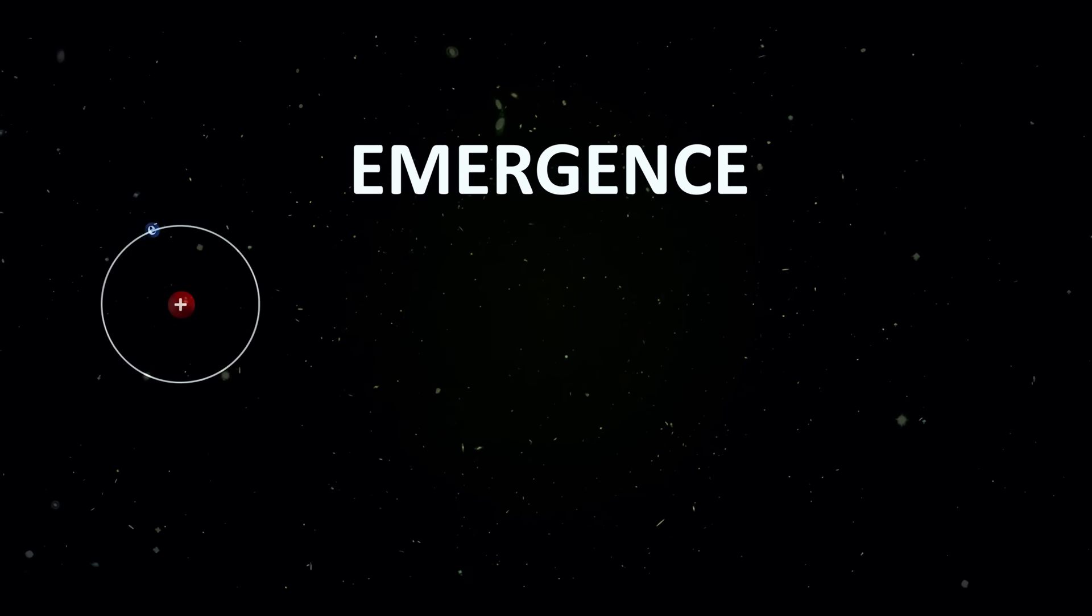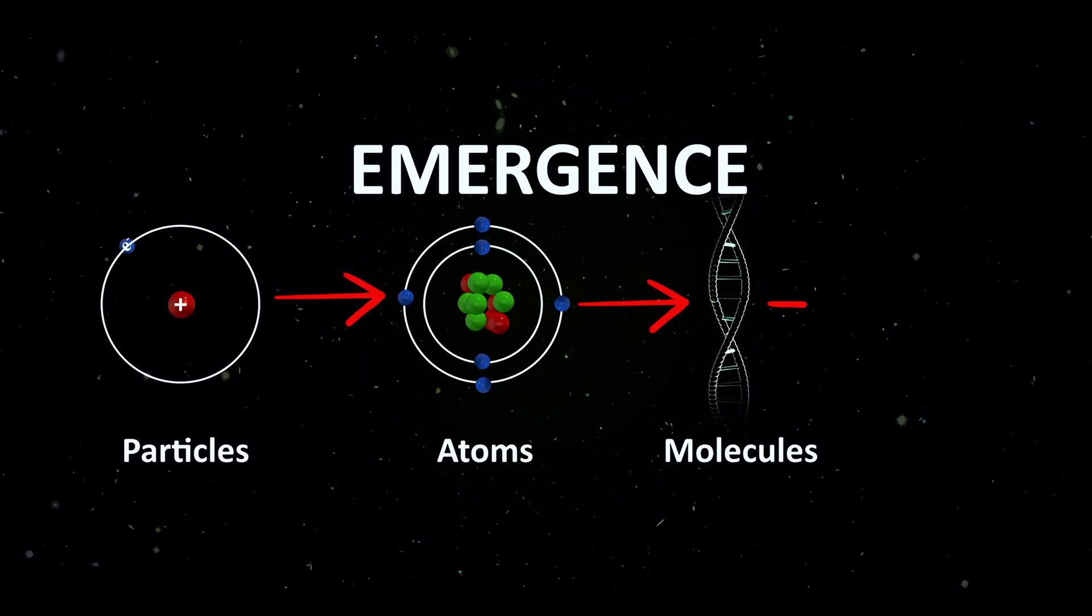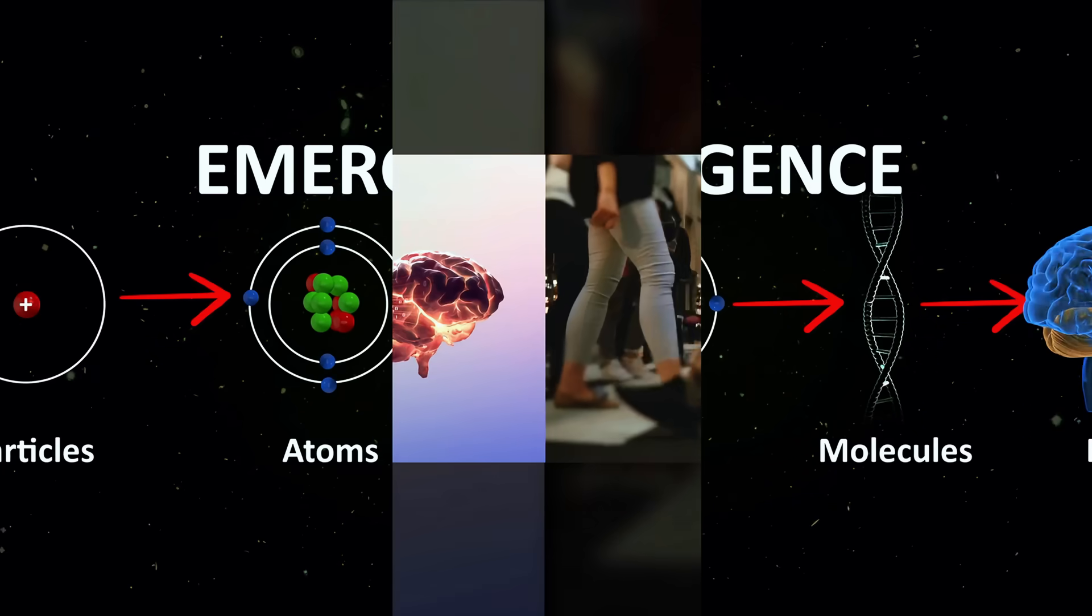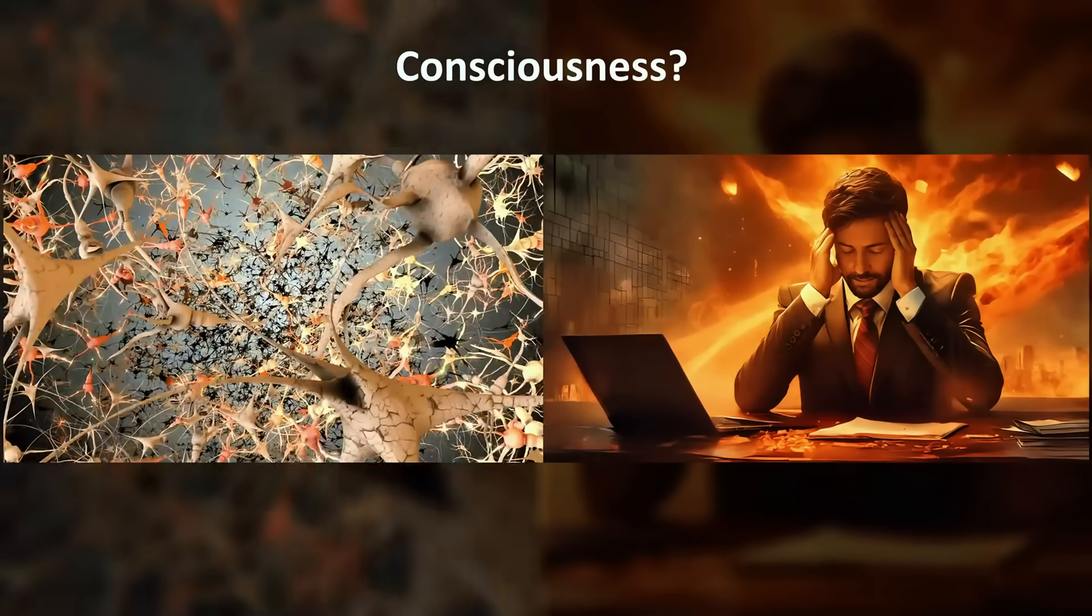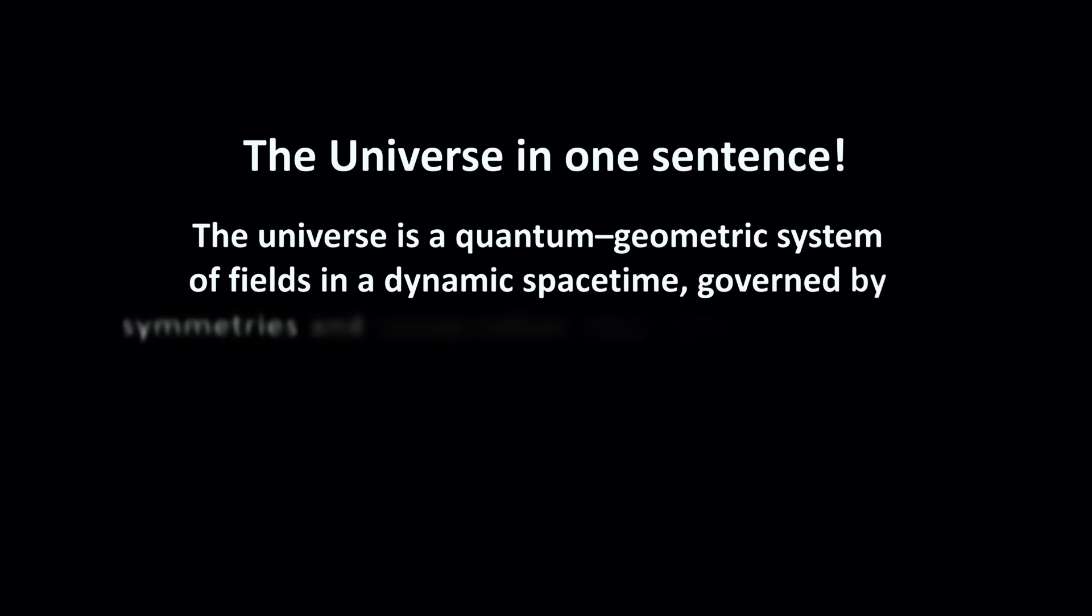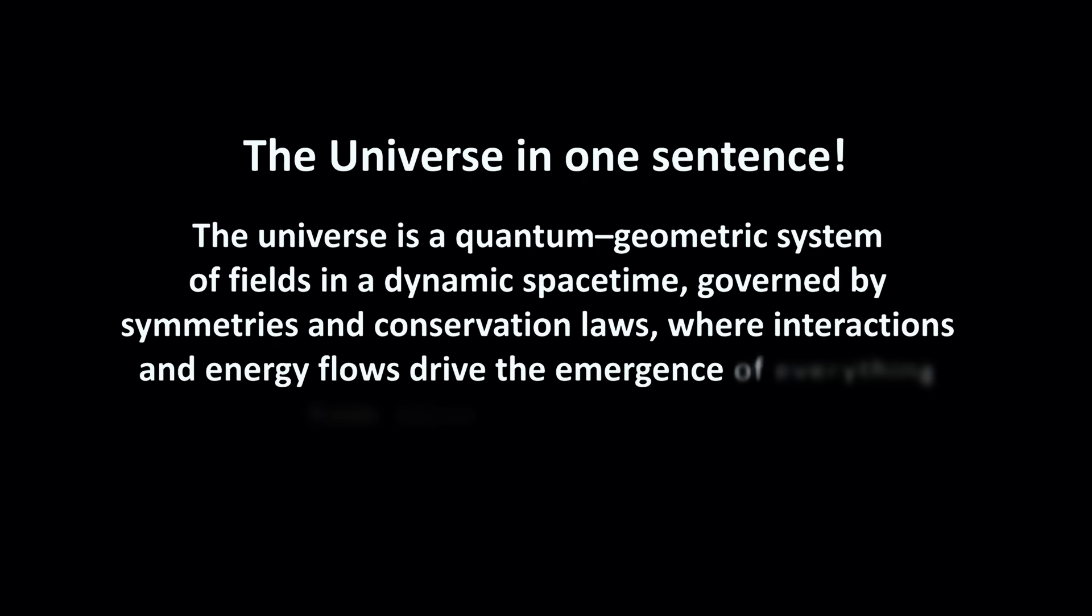And all this leads to emergence. That is, it builds complexity. Particles making up atoms that make up molecules that lead to cells, which make up brains. And brains lead to societies. Same underlying rules, but new behaviors emerge when many parts work together. The same can be said for the many interacting parts of the brain working together to make consciousness. Let's summarize this in one sentence. The universe is a quantum geometric system of fields in a dynamic space-time, governed by symmetries and conservation laws, where interactions and energy flows drive the emergence of everything from atoms to galaxies to life.